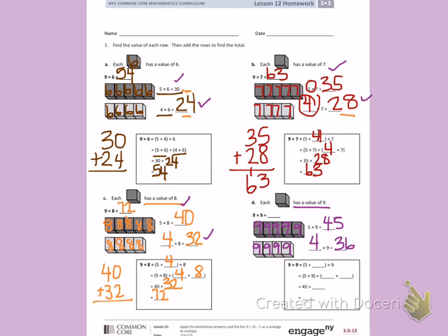Following the same pattern. They broke apart 9 into 5 plus 4. So we're distributing that to say 5 times 9 plus 4 times 9. 5 times 9 is 45. 4 times 9 is 36. I will add 45 plus 36 to find my answer. 5 plus 6 is 11. 4 plus 3 is 7. Plus 1 more is 8. Giving me a total of 81. 9 times 9 equals 81.